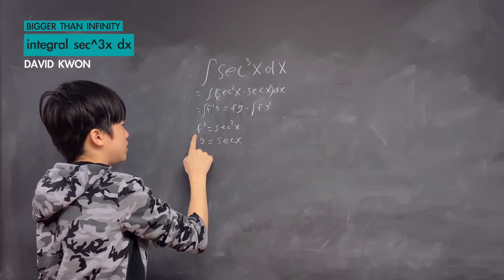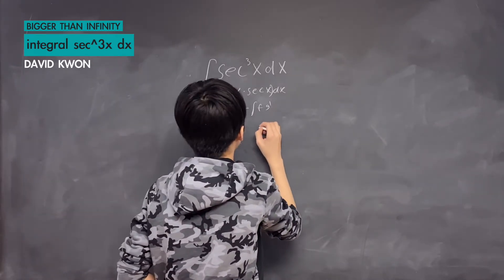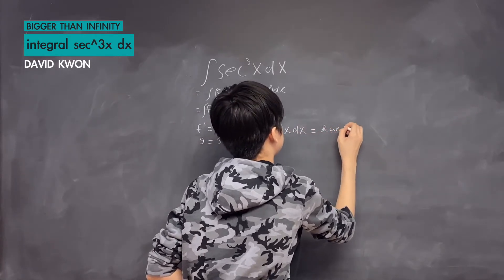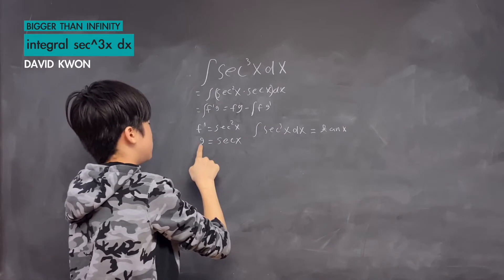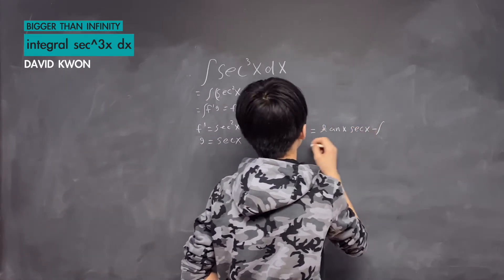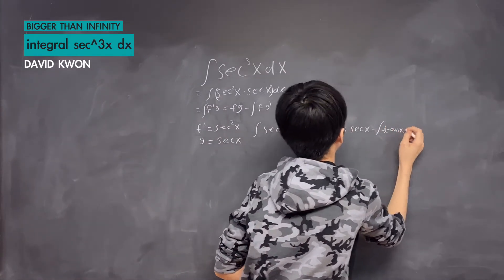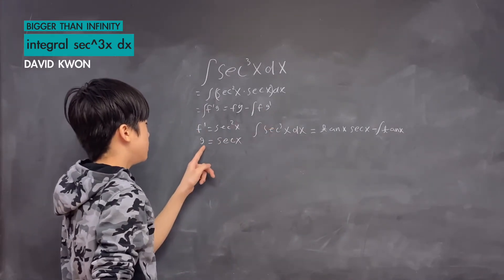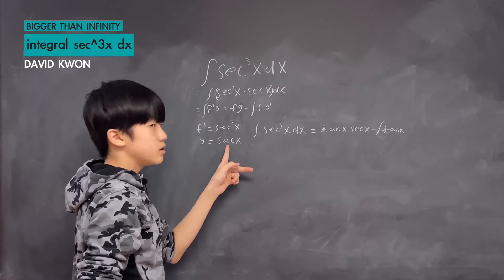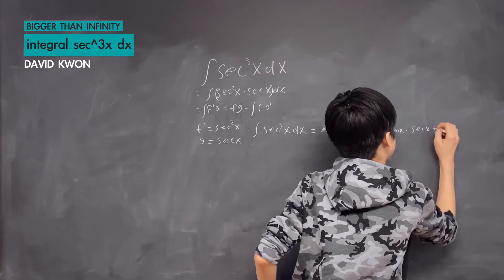Now I plug it in: the integral of f' — which is the integral of secant squared x — gives us tangent x, and g just stays by itself as secant x. Then we subtract the integral of f times g', where g' is found by differentiating g: differentiating secant x gives secant x times tangent x.